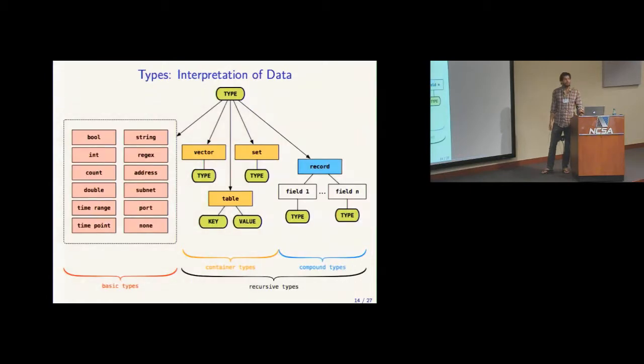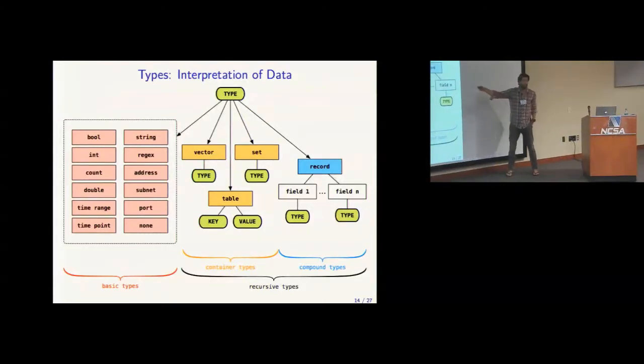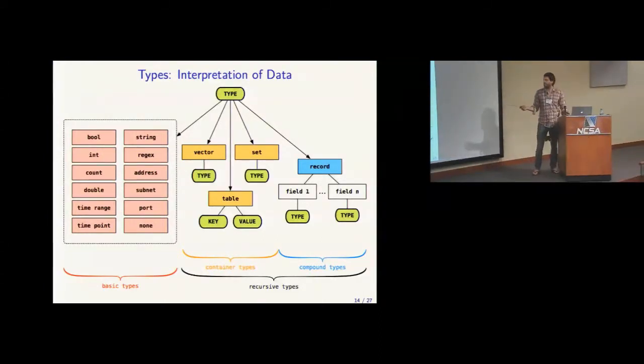And the type system is very similar to Bro. There's a bunch of basic types on the left, the red ones. And there exists also vector types, or container types, vectors, sets, and tables, which each have a subtype, the element type, or key type and value type. And there's compound types, records, where the C structs, for example, where you have named fields. And with this model, you can essentially create arbitrary types yourself, like URLs, for example. And this is where I want to go to. With this building block, you can essentially represent arbitrary activity.